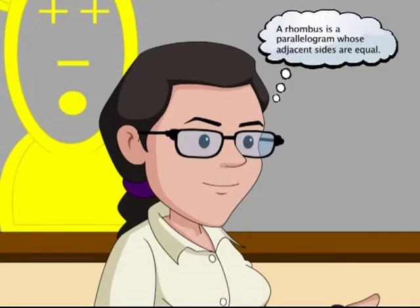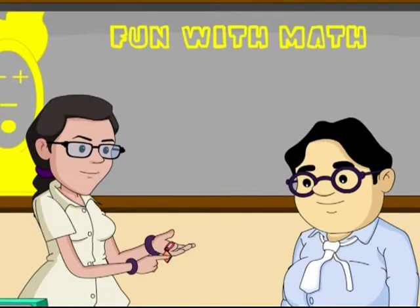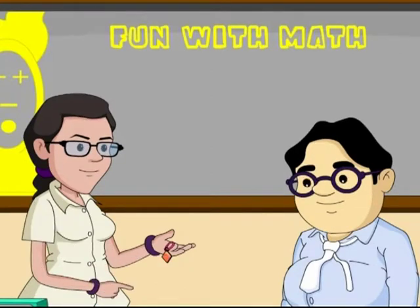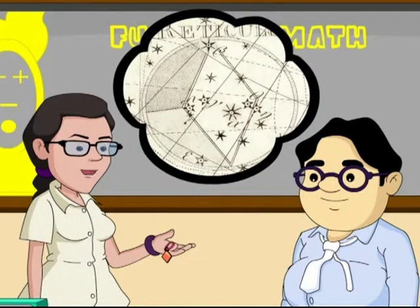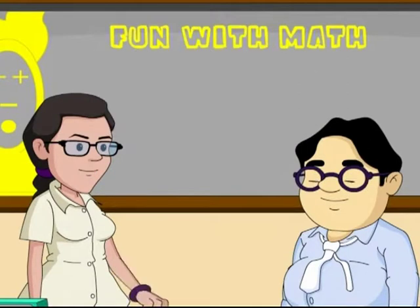Rhombus? Yes, a rhombus is a parallelogram whose adjacent sides are equal. See here, in this keychain this shape occurs quite frequently in real life. In the southern sky there is a constellation called Reticulum that's in the shape of a rhombus.